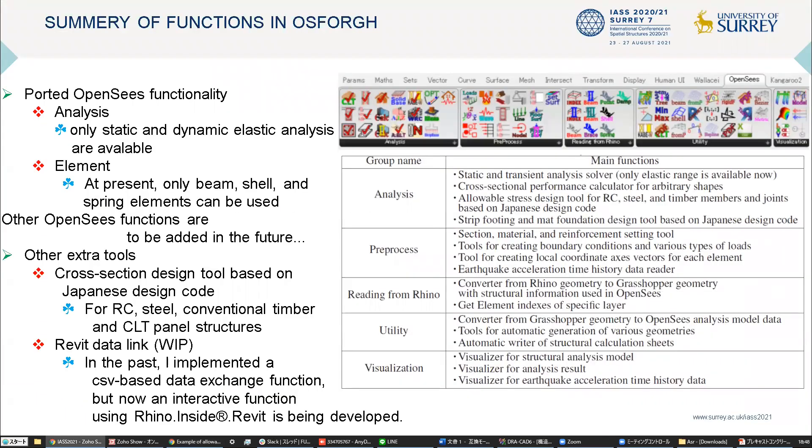The functions of OS for GH are divided into five main groups: analysis, pre-process, reading from Rhino, utility, and visualization. At present, only static and dynamic elastic analysis functions are implemented, and only beam, shell, and spring elements can be used in OS for GH.